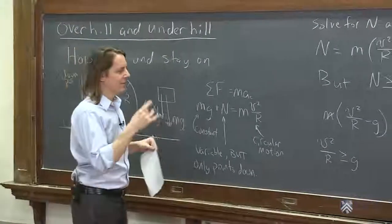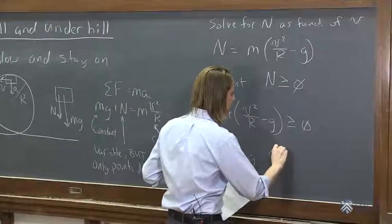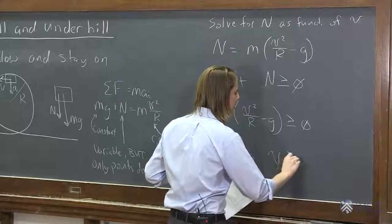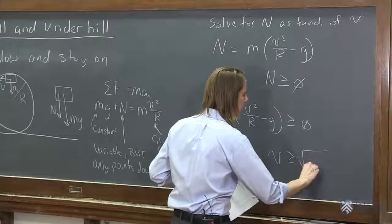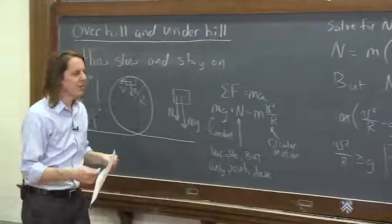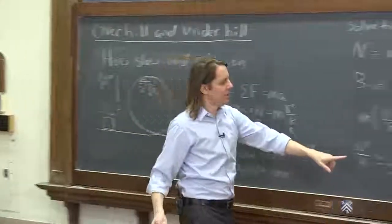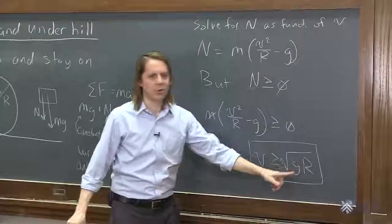You say, okay. Then this velocity, this critical slowest velocity you've got, is that v must always be greater than or equal to the square root of gr. And this is mathematically the answer. v must be greater than or equal to that. How slow can you go and stay on would be the equal. You can get down to the square root of g times r.